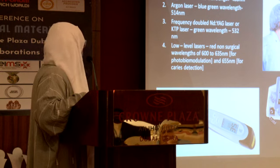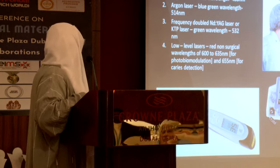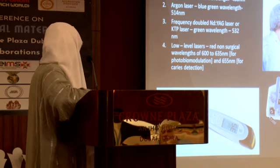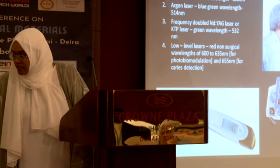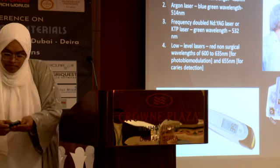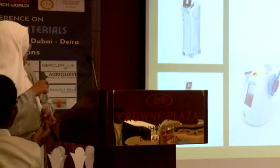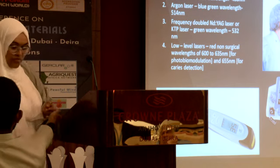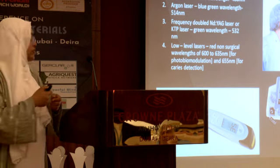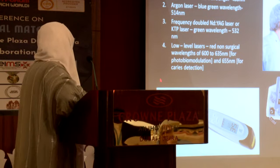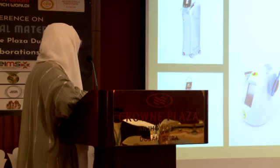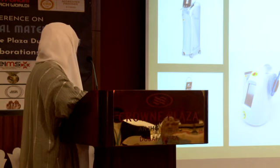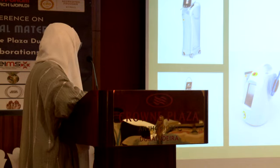The 600 to 635 nanometer range is used for photobiomodulation, which I'll be talking about in detail. And 655 nanometers is used for caries detection. These are the four dental units we use from the visible light spectrum. The invisible laser lights we use are the diode lasers with 800 to 1064 nanometers.